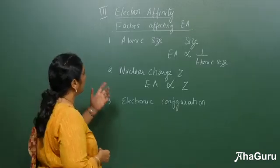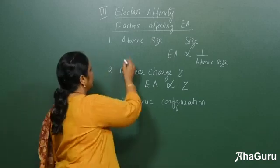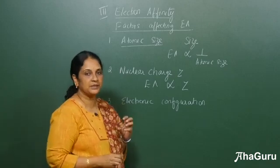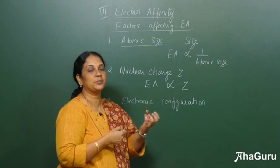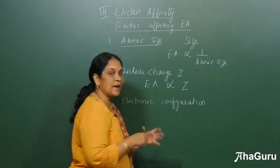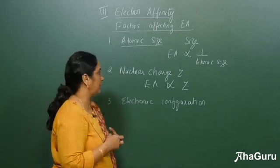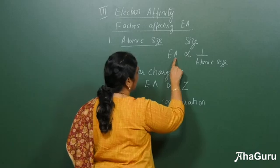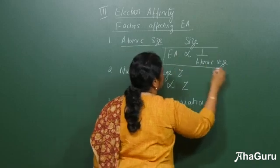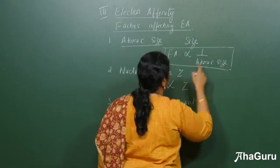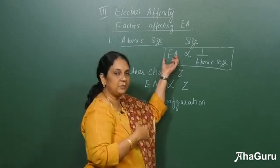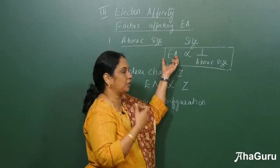Now let us see the factors affecting electron affinity. The first factor is atomic size. When the size of the atom is very small, there will be electron-electron repulsion, making it difficult for the atom to take up an electron. Electron affinity is inversely proportional to atomic size — as atomic size increases, it becomes more difficult for the electron to be taken up.